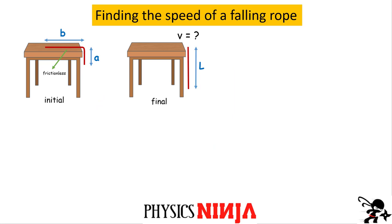We start with some basic definitions. We have B on the table, A hanging off, and L is the total length. So we can write that the length of the rope must be A plus B — that is fixed. We're also going to assume the rope has constant density everywhere, which I'll write as lambda, equal to the total mass of the rope divided by the total length. That is also a constant.